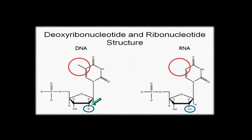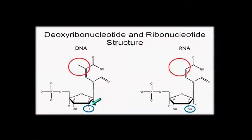At the 2' position, no hydroxyl group is present in case of DNA, that's why it is called 2-deoxyribose. And in case of RNA, we can find the presence of hydroxyl group, that's why it is called ribose sugar.